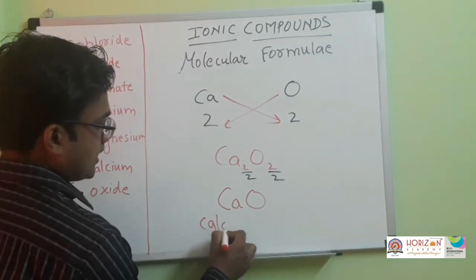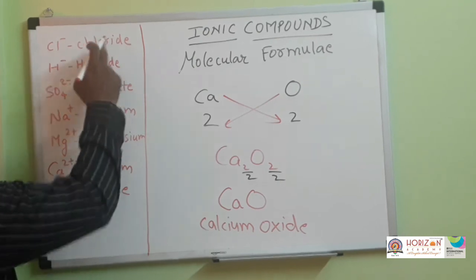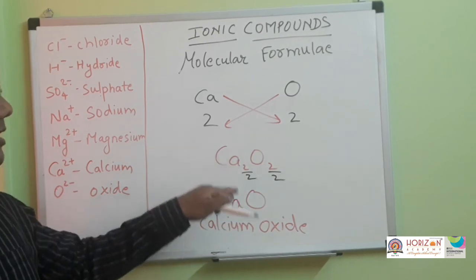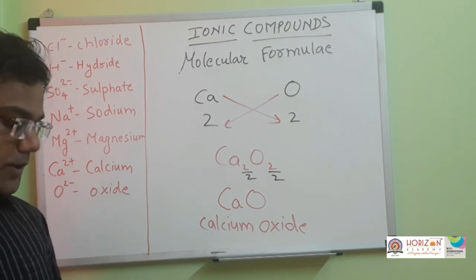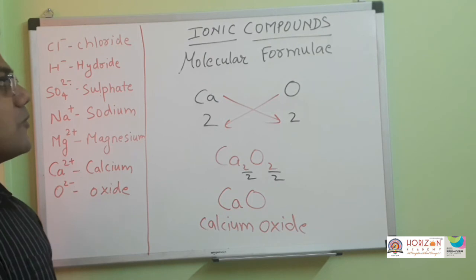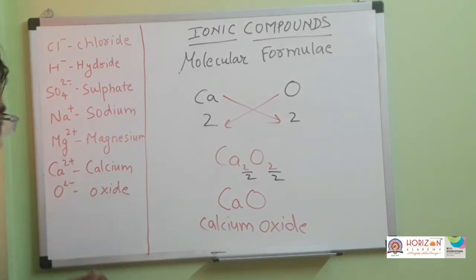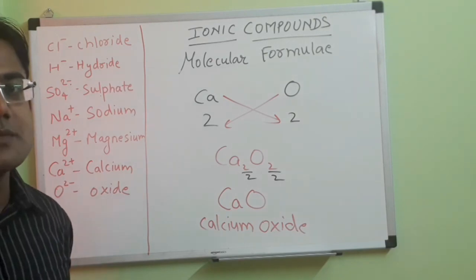The name is calcium oxide — left side the name of the basic radical, calcium, and right side the name of the acidic radical, oxide. In this way you can find molecular formulae of different ionic compounds. For this you must remember all the charges of different radicals — acidic and basic — and some examples of monovalent, divalent, and trivalent. Our chapter is over; in the next video we will discuss question answers of the textbook exercises.